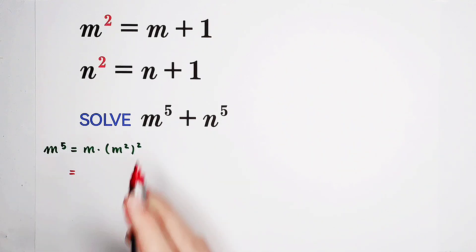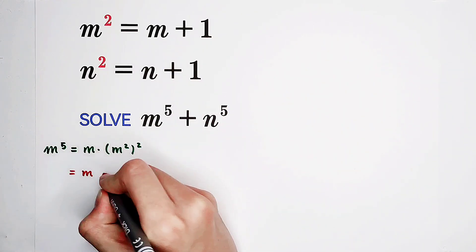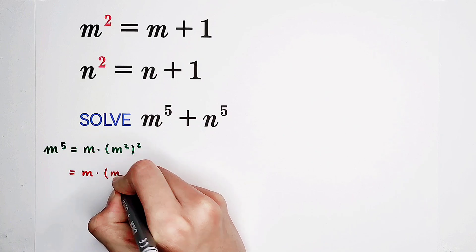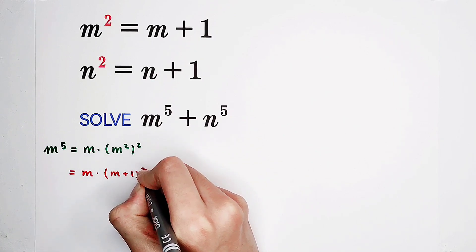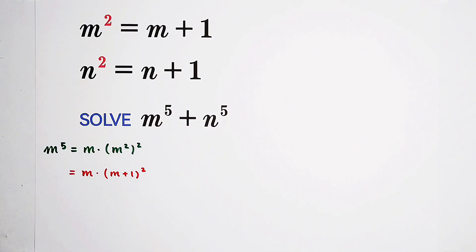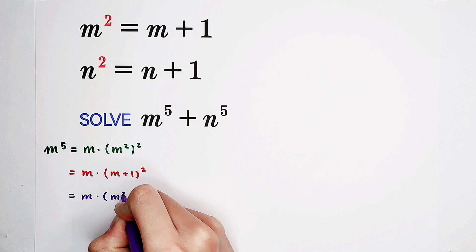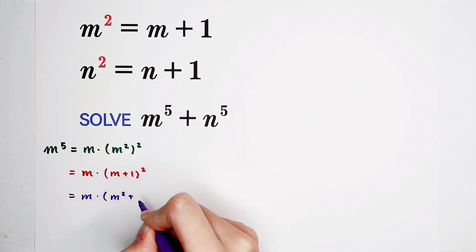Then we know that m squared equals m plus 1. So it is just m times m plus 1 all squared. Very good. The third step, it is in the bracket, m squared plus 2m plus 1.